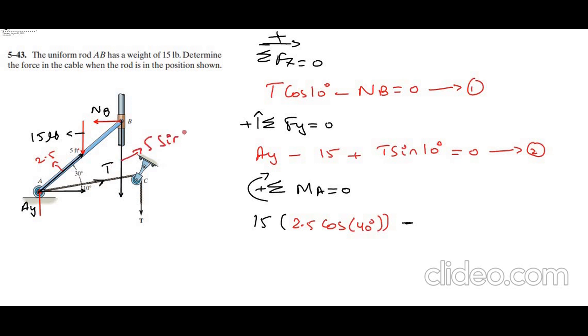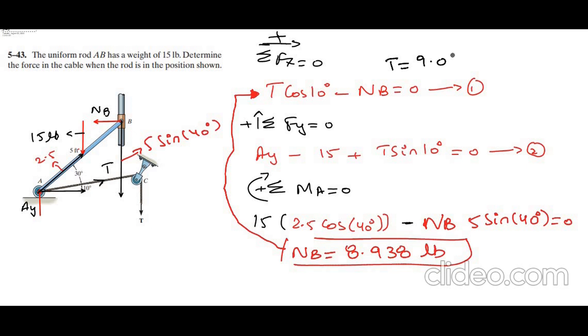So from here NB is equal to 8.938 pounds. If you put this value of NB into equation 1, it would be a lot easier to solve the tension T, our objective, because we have to find the force in the cable which means the tension. From equation 1 we have T equals 9.076 pounds.